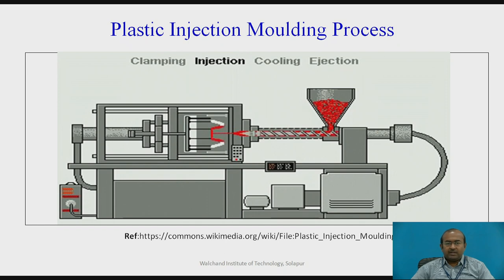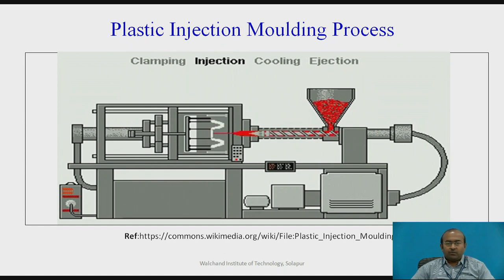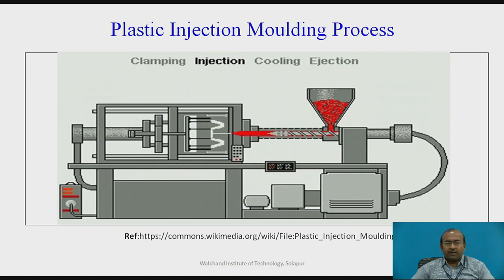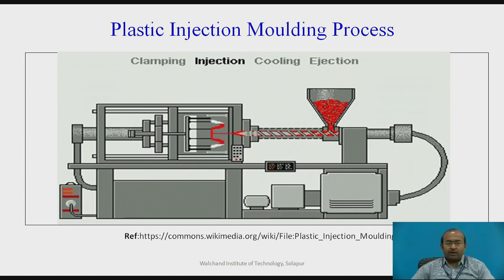This is the second stage of the plastic injection molding process. After the mold halves are matched and firm surface contact is ensured, the next stage is injection. Through the hopper, raw material is fed and forwarded by the lead screw, then injected into the mold cavity through the nozzle. The equivalent quantity required to fill the cavity is forwarded through the lead screw.